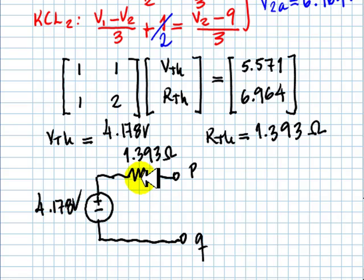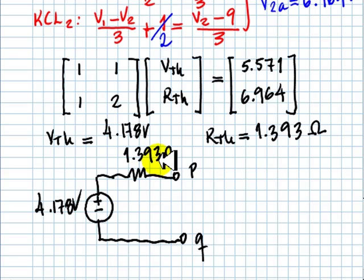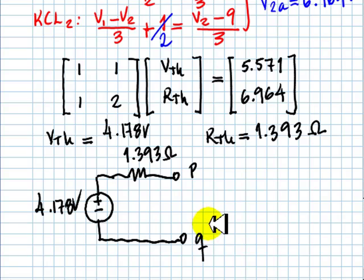An interesting comment: it is possible to get a negative value for V7A — you still draw the source right side up but write a negative value. It is also possible, when you have controlled sources in the circuit, to get a negative value for R7A. RTH is a representation of the behavior of a circuit and can be a negative value, though it isn't in this exercise. This circuit is equivalent to the original one at port PQ. Thank you very much.